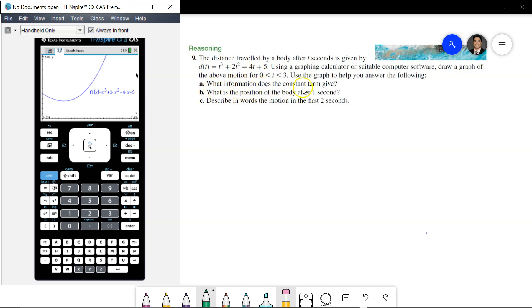So, what information does the constant term give? Well, it's going to translate it to 5 units. Now, what is the position of the body after 1 second? This is what we could do. If you remember the trace function, so going to menu, hit 5, and then just graph trace, and you've got this cursor, which follows immediately. And so, you can go left and right.